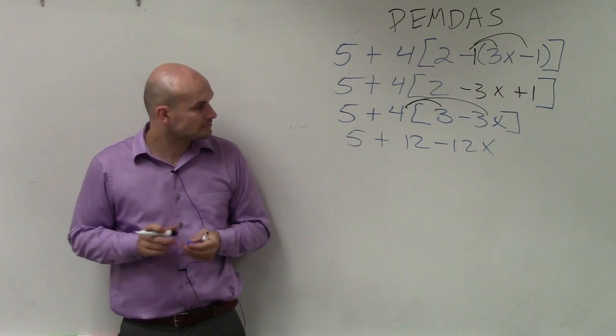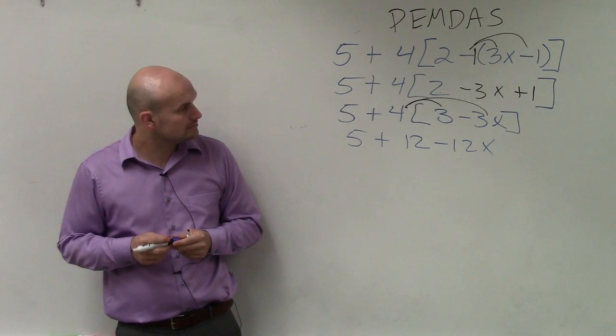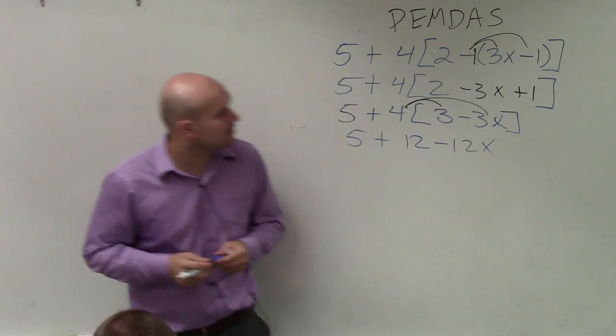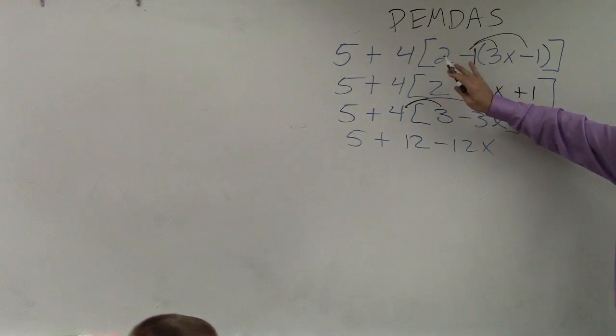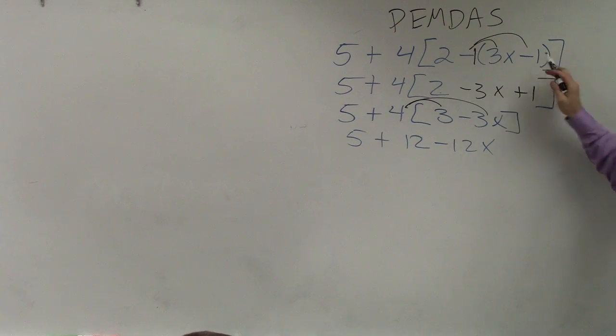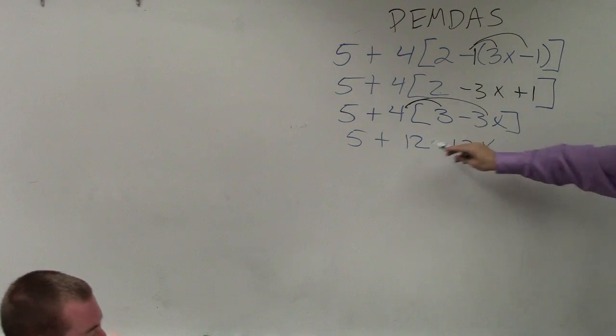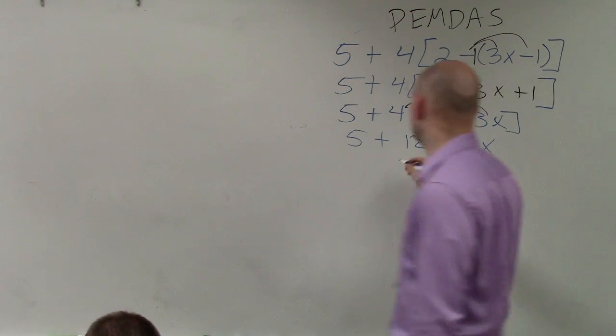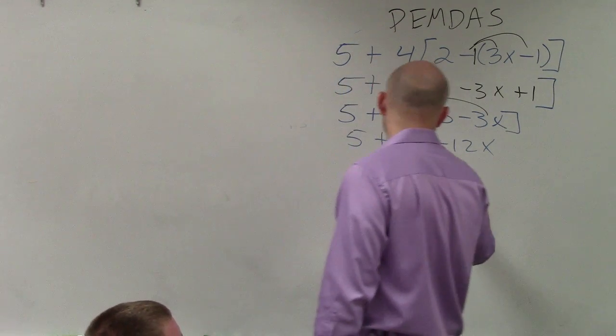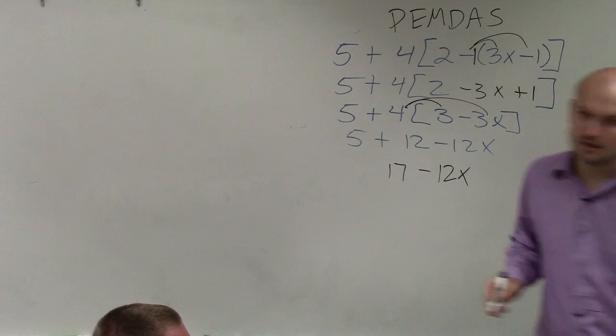I can do 2 and 3 and 1. Where? What should happen? This one? No. This is 2 minus this parentheses. So it's negative 1 times both of those. Then I can combine 5 plus 12 is going to be 17 minus 12x. And that's it.